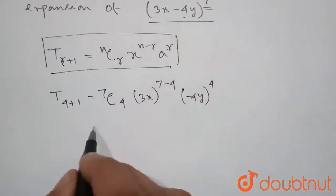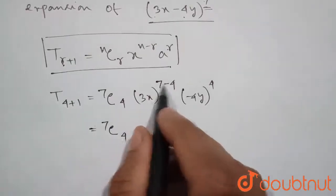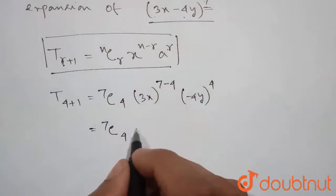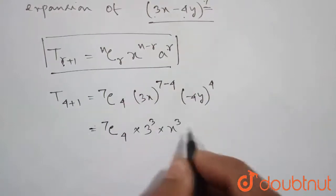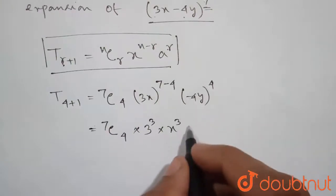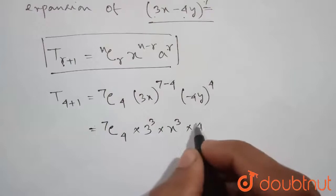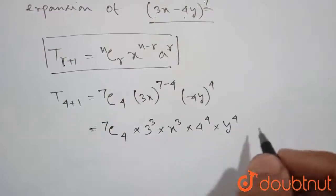So now further solving we can write 7C4, 7-4 will be 3. So it will be times 3 cube times x cube and the power is event so minus will become positive 1, positive times 4 to the power 4 times y to the power 4.